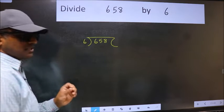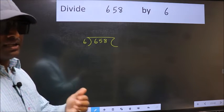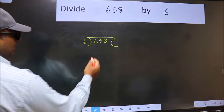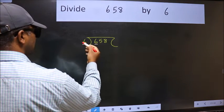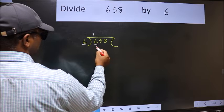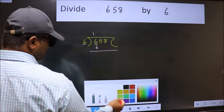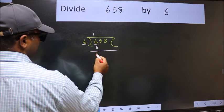This is your step 1. Next, here we have 6 and 6 here. When do we get 6 in the 6 table? 6 once 6. Now we should subtract. We get 0.